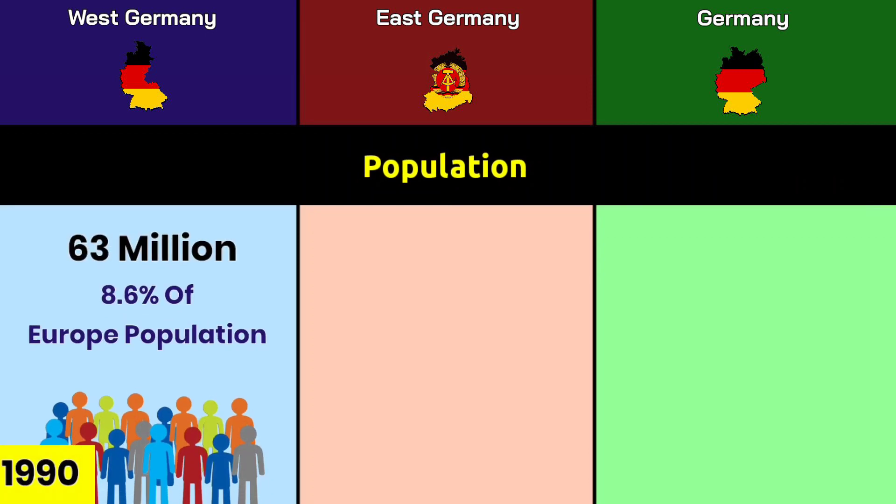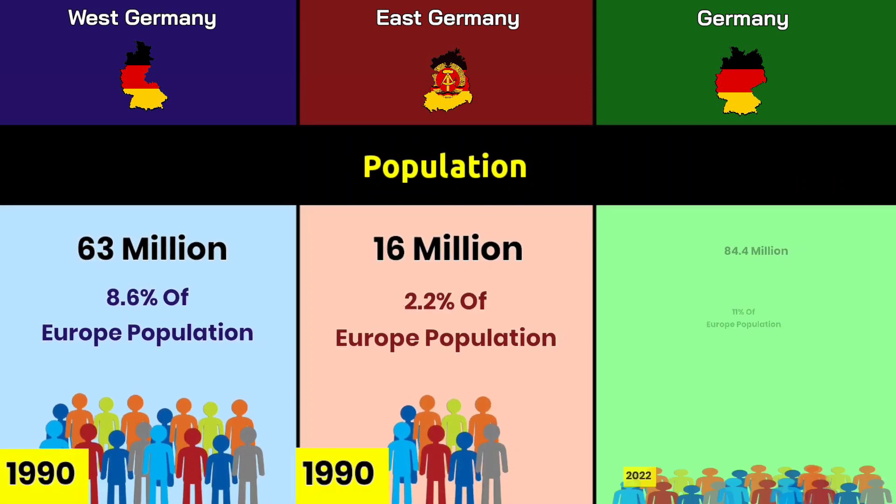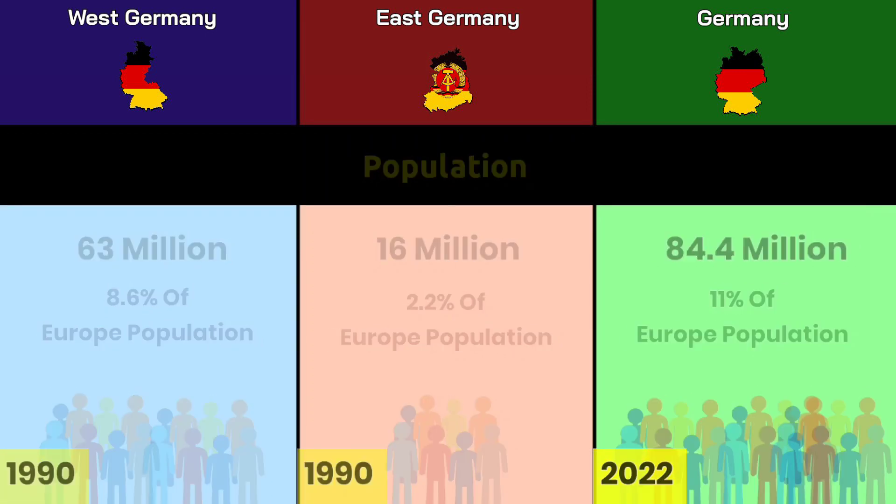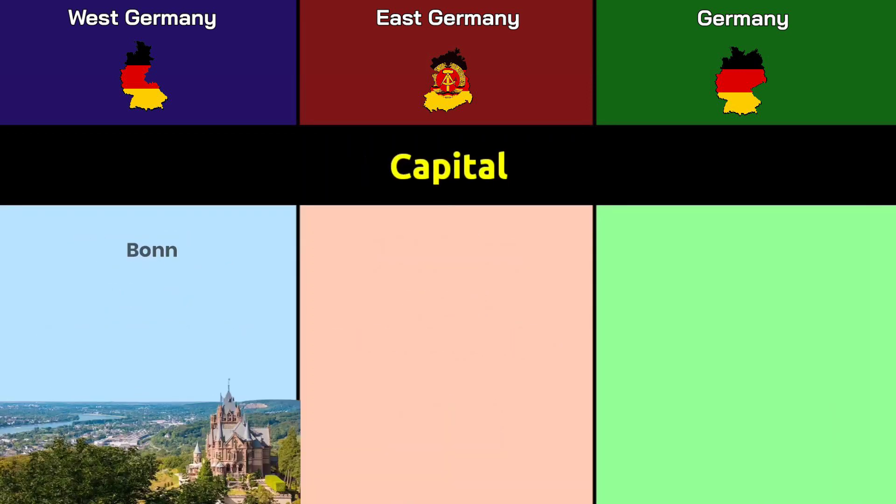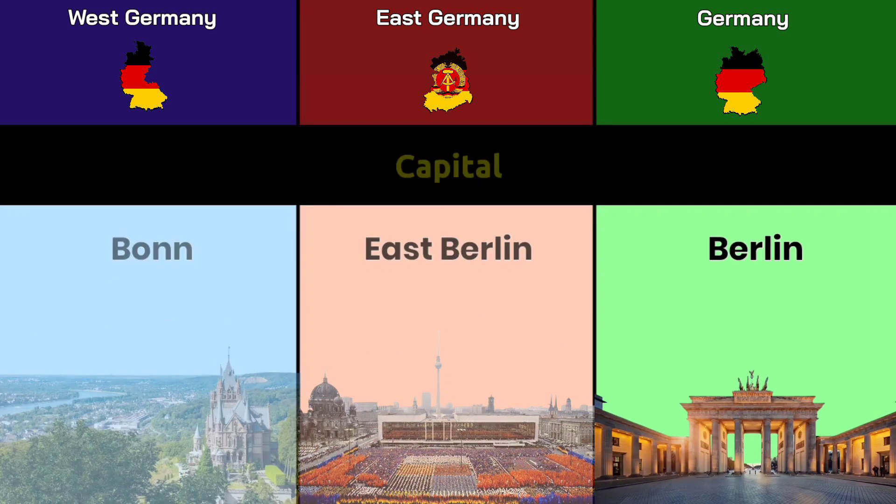Population: West Germany had 63 million, East Germany had 16 million, and modern Germany has 84.4 million. Capital: West Germany's capital was Bonn, East Germany's was East Berlin, and Germany's capital is Berlin.